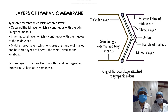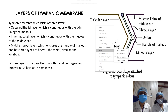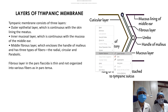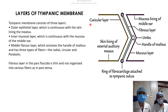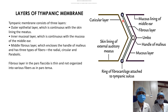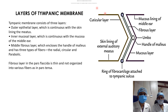The tympanic membrane consists of three layers: the outer epithelial layer, which is continuous with the skin lining the meatus; the inner mucosal layer, continuous with the mucosa of the middle ear; and the middle fibrous layer, which encloses the handle of the malleus and contains radial, circular, and parabolic fibers. The fibrous layer in the pars flaccida is thin and not organized into distinct fiber types as in the pars tensa.